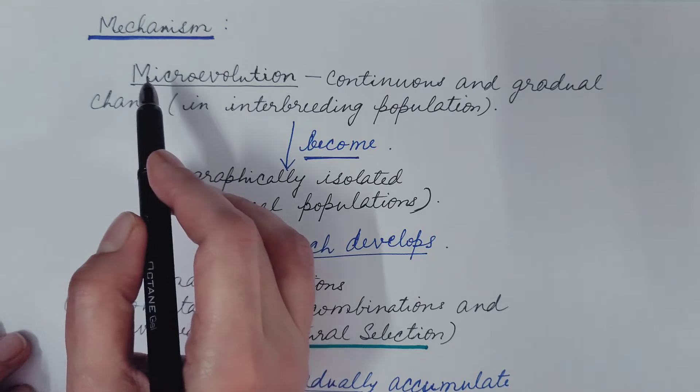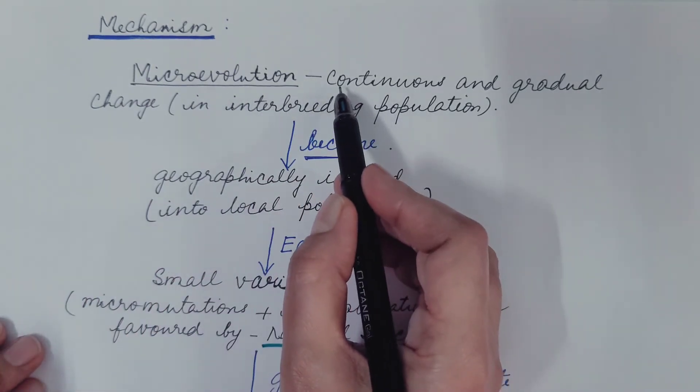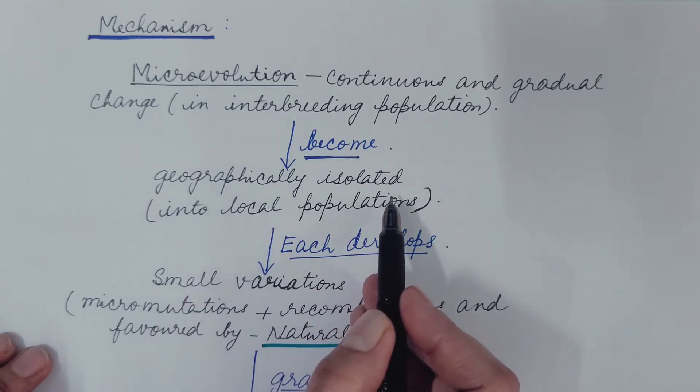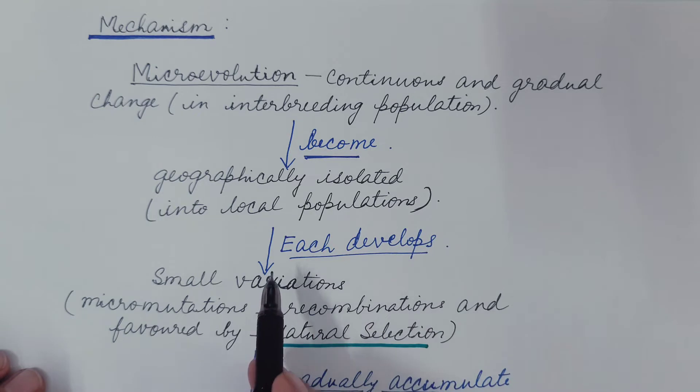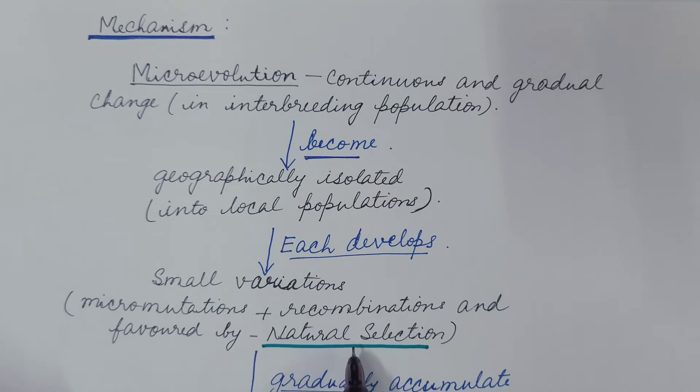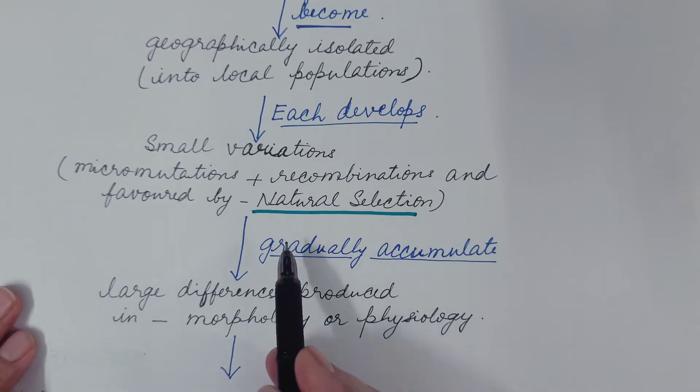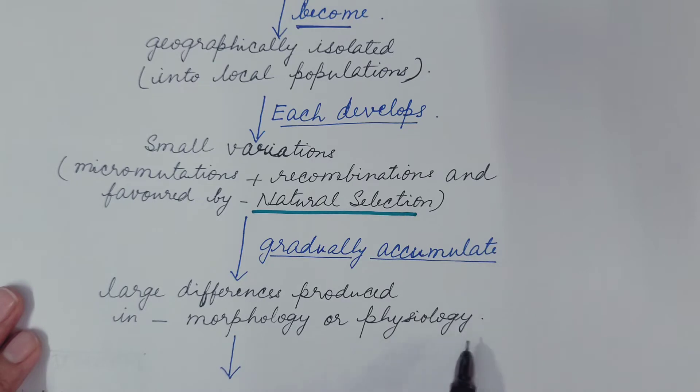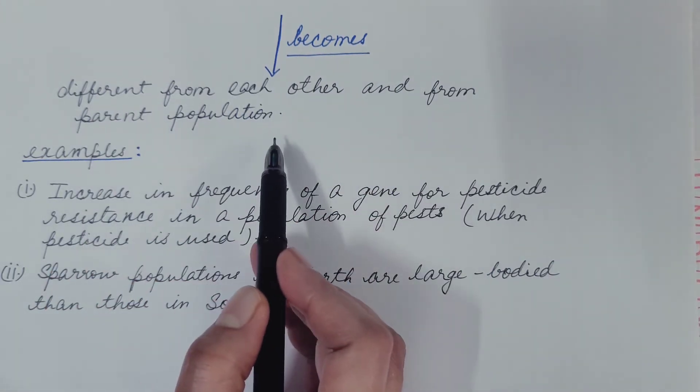Now let us understand the mechanism of microevolution. Microevolution is continuous and gradual change in interbreeding population. When these become geographically isolated into local populations, each develops small variations. These variations are developed due to micromutations and recombinations and are favored by natural selection. That is undergoes differential survival and differential reproduction. Hence these variations gradually accumulate. And gradual accumulation of these variations produces large differences in the morphology or physiology of the individuals of a population. As a result of which these become different from each other and from parent population.